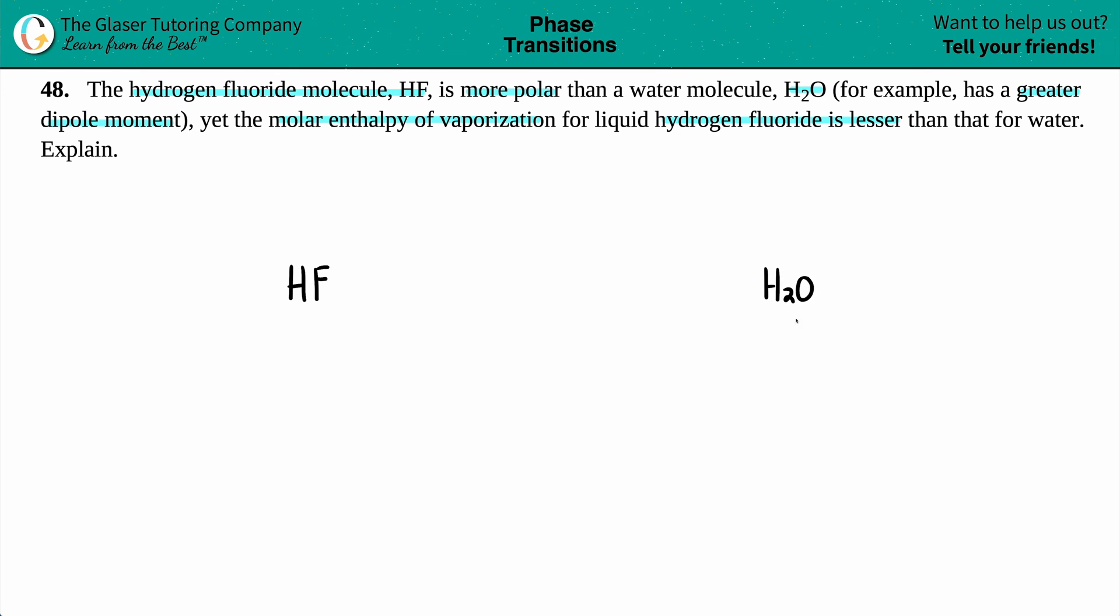Now, they did say that the molar enthalpy of vaporization - an enthalpy of vaporization is delta H, because that's enthalpy. And we just write that as delta H vap. The delta H for vaporization is the enthalpy of vaporization. It's just the energy needed to vaporize.